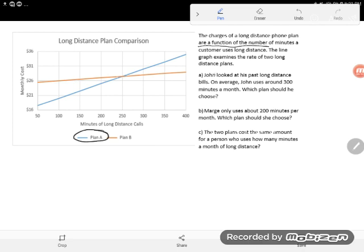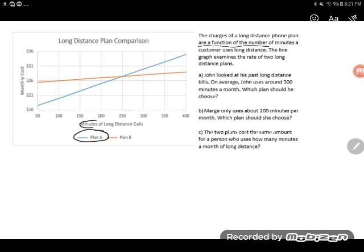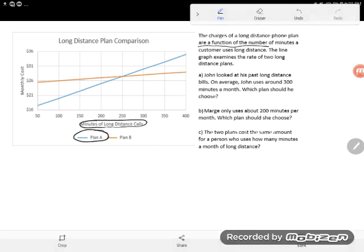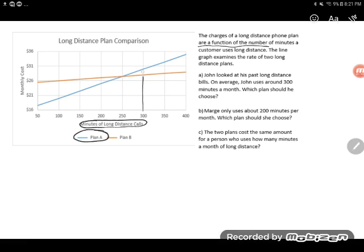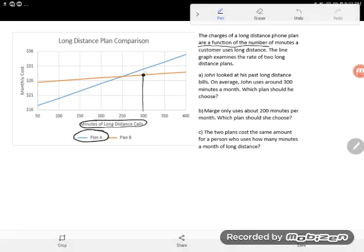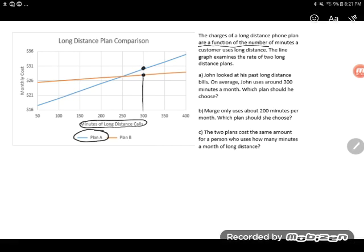Okay, so let's take a look at John, the first question. It says John looked at his past long-distance bills. On average, John uses around 300 minutes a month. Which plan should he choose? So since John uses 300 minutes a month, we are going to look here at this horizontal axis because that's where you see the minutes of long-distance calls. And I'm going to go up from 300 here and I'm going to look. He has an option. He can go with this orange line Plan B or this blue line Plan A.